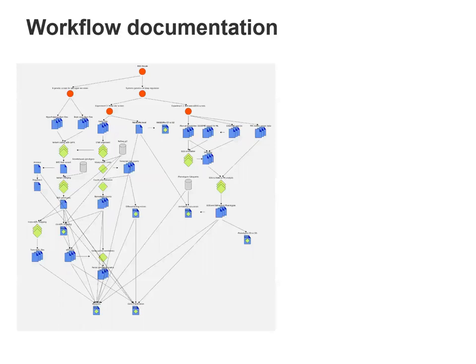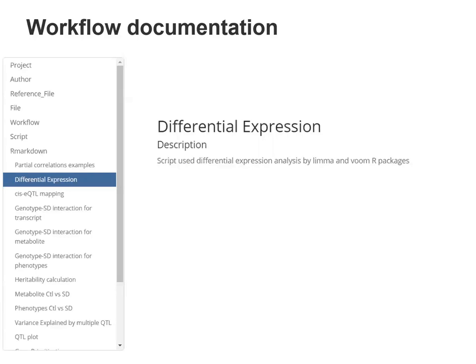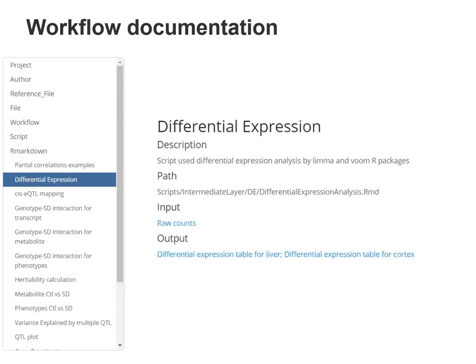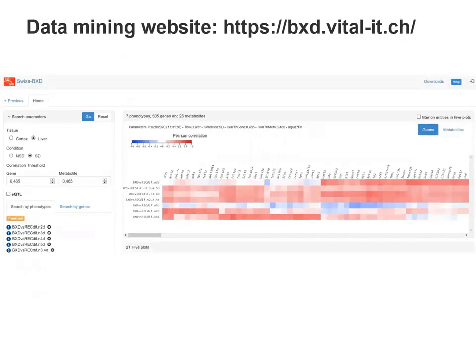It is also important to document the workflow, and we have a general scheme for orientation. For example, taking the differential expression analysis, we can see that this step is performed by an R Markdown file, and we can find general information about what this file is doing, where it is located, and which are the inputs and outputs of this analysis. These files are themselves described, and so on. We also have a website to mine the data, so that anyone can explore the results even without having programming skills.